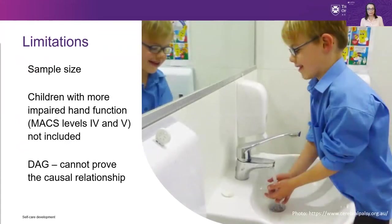With regards to limitations, a larger sample size would have enabled more detailed analysis. Children classified at MACS levels four and five were not included. And while a DAG makes our assumptions about causal relationships explicit, the model cannot prove the causal relationship.